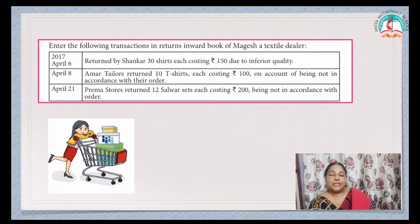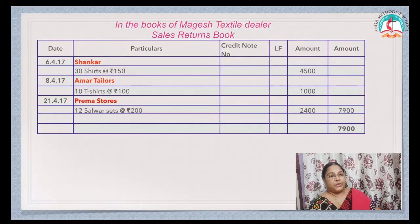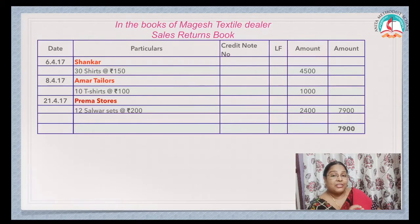Enter the following transactions in the Returns Inward Book of Mahesh, a textile dealer. Returned by Shankar: 30 shirts each costing ₹150, reason — inferior quality. Amar Tailors return 10 t-shirts each costing ₹100, on account of being not in accordance with their order. Prema Stores return 12 salwar sets each costing ₹200, being not in accordance with the order. In the Sales Returns Book heading, if your problem specifies a credit note number, write it; otherwise leave it blank.